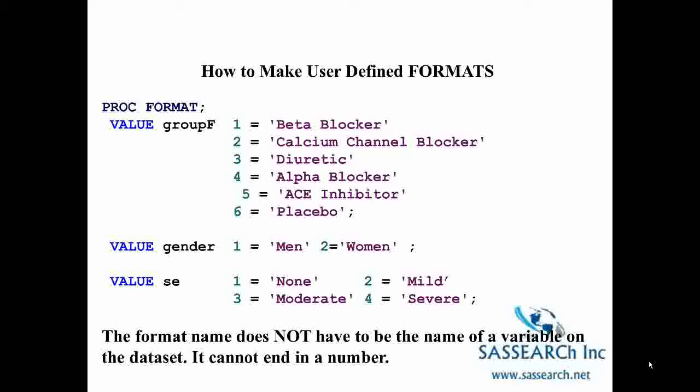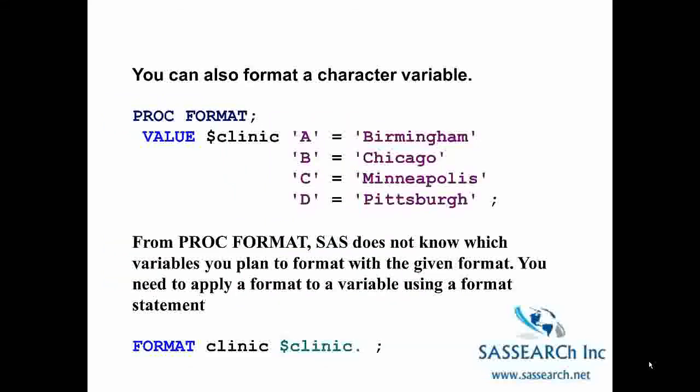You can also format a character variable. For example, PROC FORMAT VALUE $CLINIC where A equals 'Birmingham', B equals 'Chicago', C equals 'Minneapolis', and D equals 'Pittsburgh'. This is a format that will be attached to a character variable with responses A, B, C, or D.